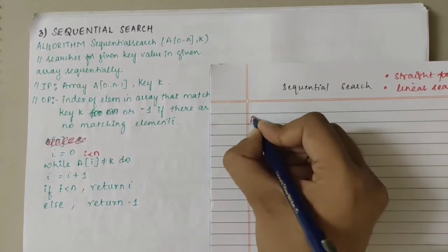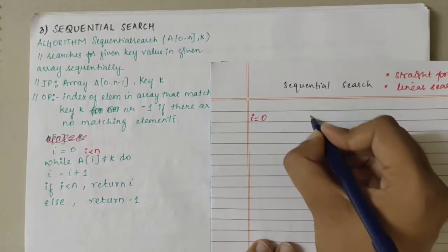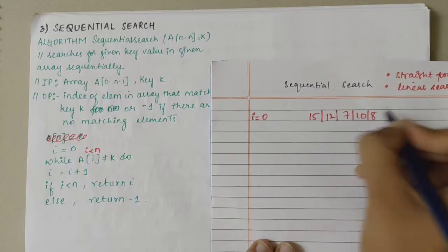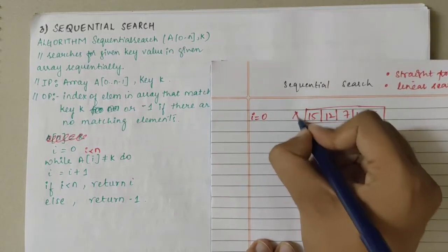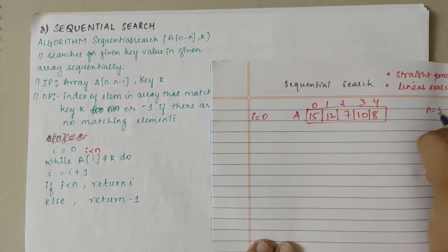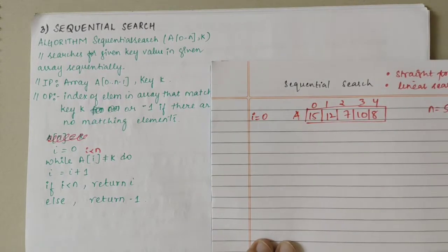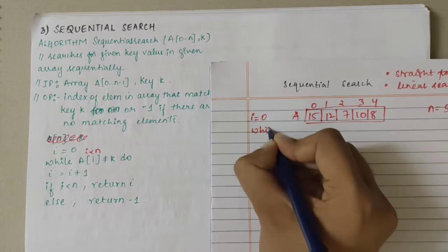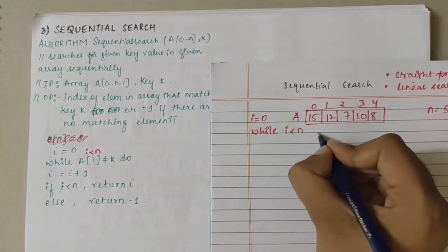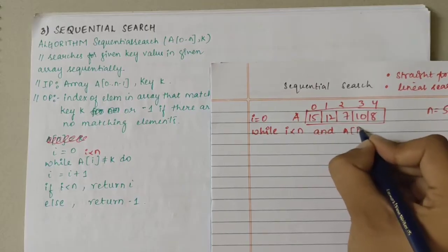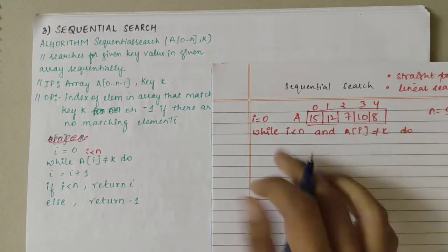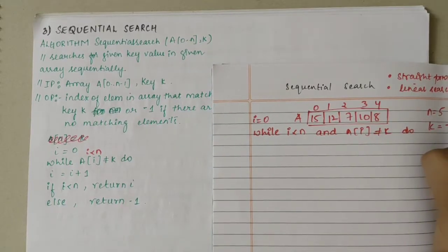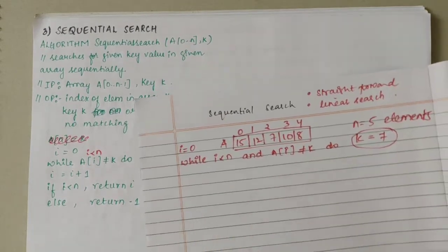Initially, i is taken as 0. Let me write an example. I'll take elements 15, 12, 7, 10, and 8 — array A with indices 0, 1, 2, 3, and 4. I have taken totally 5 elements, but the indexing starts from 0 to 4. Initially I set i equal to 0. Next I have a while loop: i should be less than n, and A[i] should not be equal to k. Suppose k value is 7.